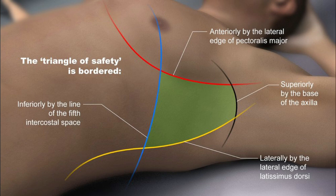The triangle of safety is an anatomical region in the axilla that helps guide safer pigtail catheter placement. With the arm abducted as demonstrated in the image, the triangle is bordered anteriorly by the lateral edge of the pectoralis major, superiorly by the base of the axilla, laterally by the lateral edge of the latissimus dorsi, and inferiorly by the fifth intercostal space. As with all procedures with an intercostal approach, be sure to place the catheter close to the superior border of the rib below the intercostal space to help avoid injury to the intercostal neurovascular bundle.